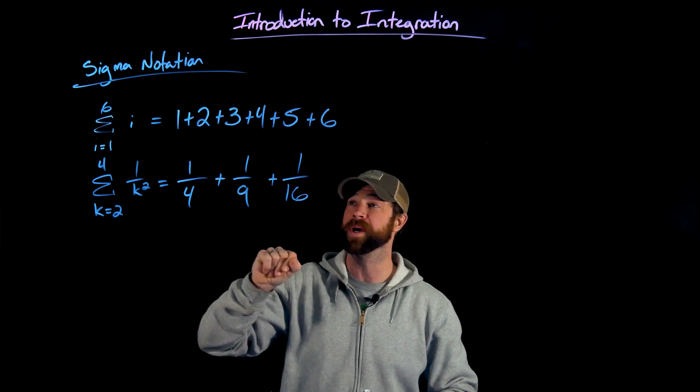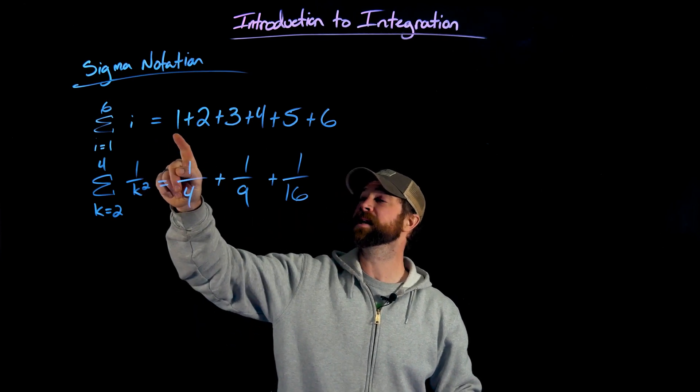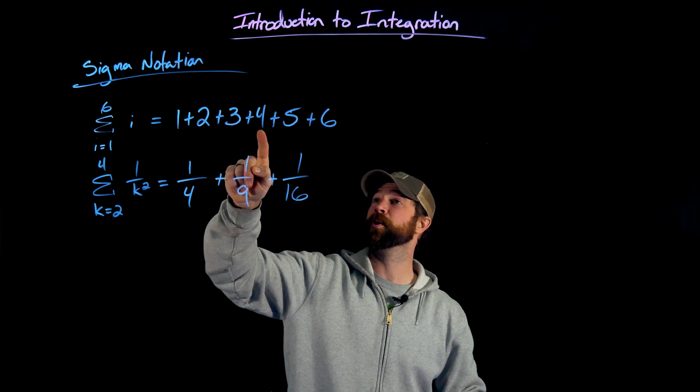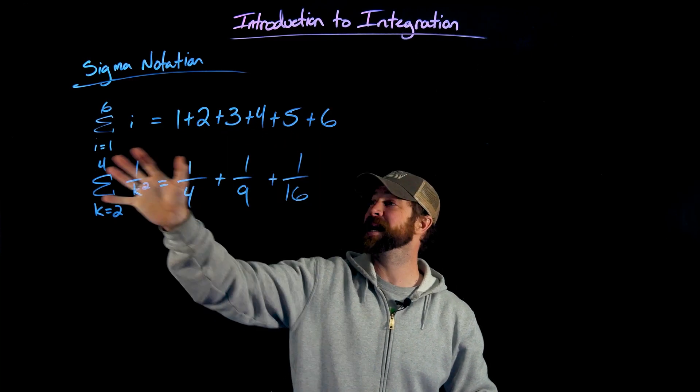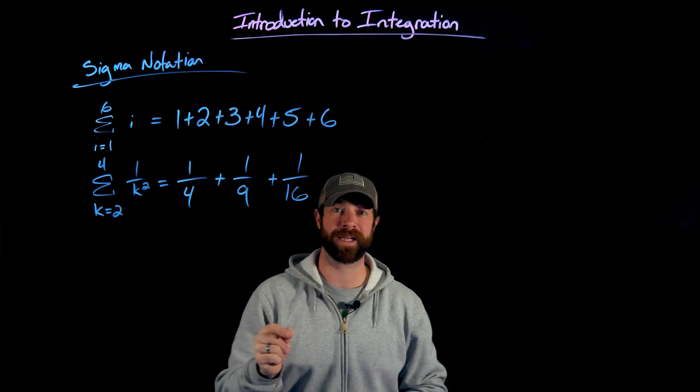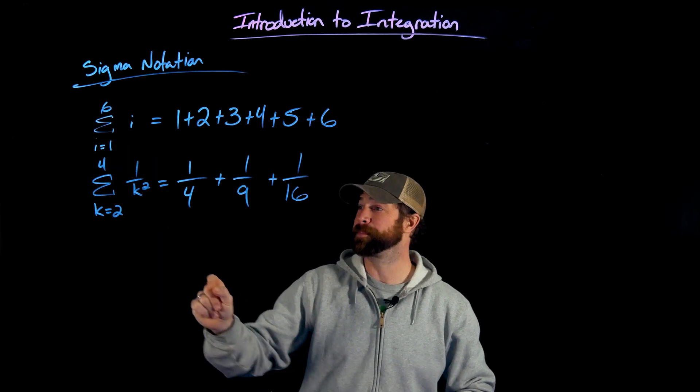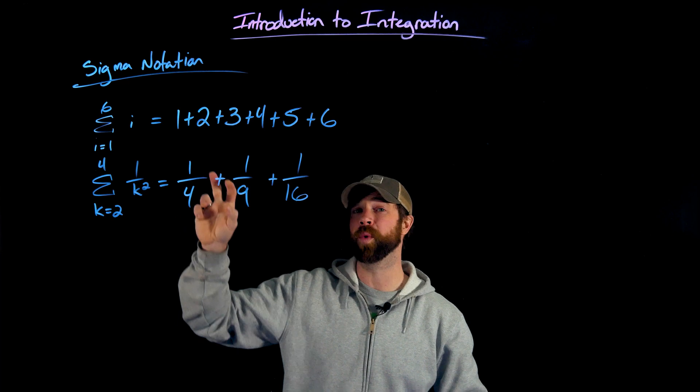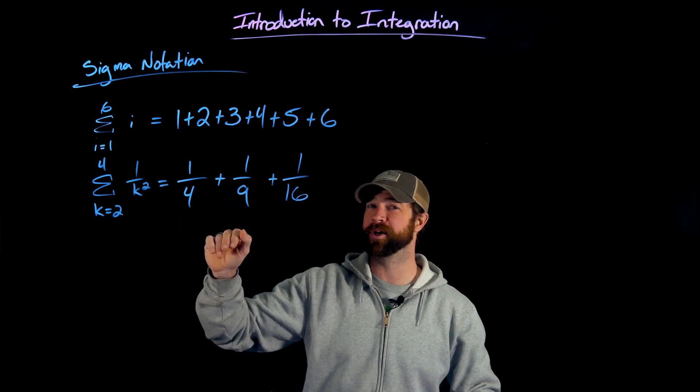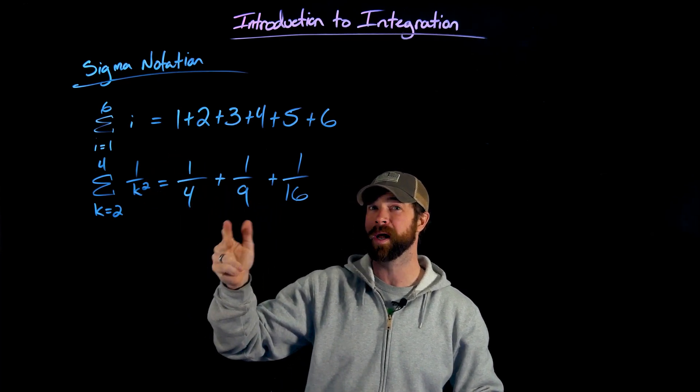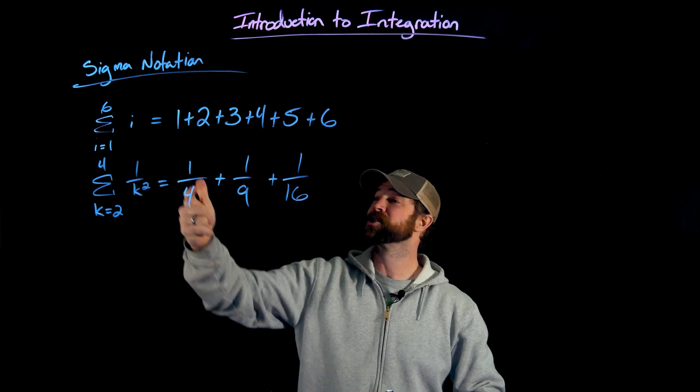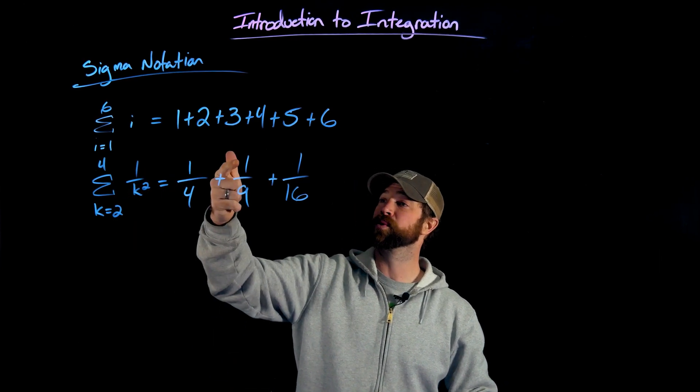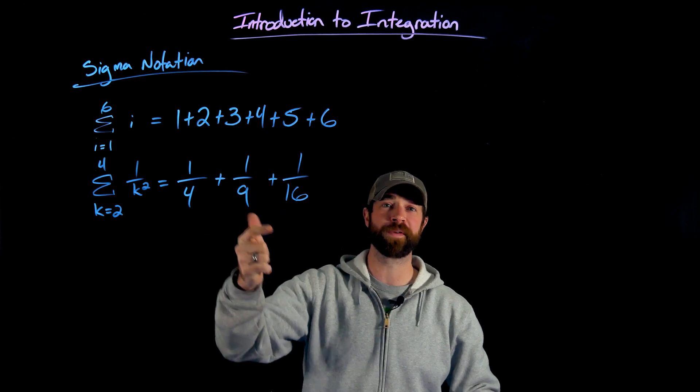In this case, it goes from one, then to two, then to three, plus four, plus five, plus six. That this right here is the expansion of what this statement means right here. And then the second example, I'm starting at two and I'm going to four. So I only have three terms here for two, three and four and each term is going to be one over that k squared. So I have one over two squared plus one over three squared plus one over four squared.